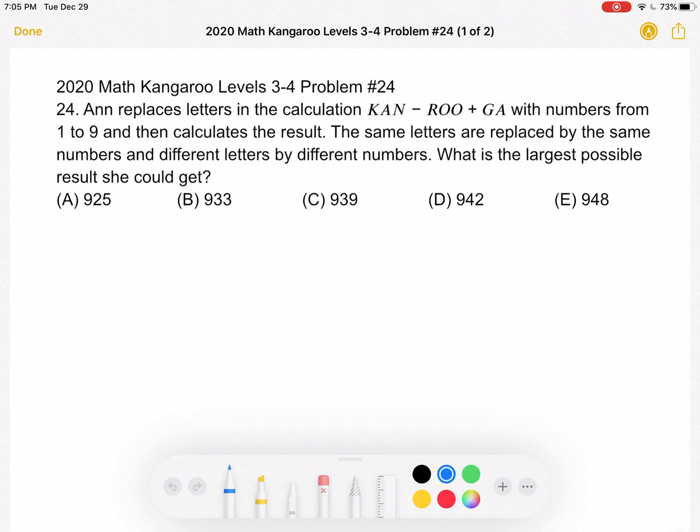This is the 2020 Math Kangaroo Levels 3-4, problem number 24. Ann replaces letters in the calculation KAN minus ROO plus GA with numbers from 1 to 9 and then calculates the result.